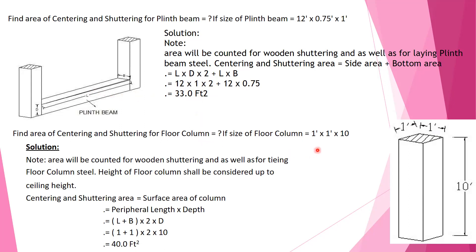For a column of size 1 foot by 1 foot by 10 feet height, the calculation is: surface area equals length plus breadth, multiplied by 2, into depth — the total peripheral area. That means 1 plus 1 into 2 into 10, that will be 40 square feet of area for this particular column.